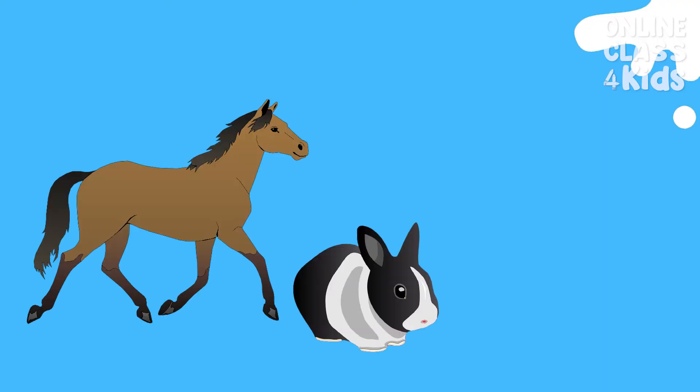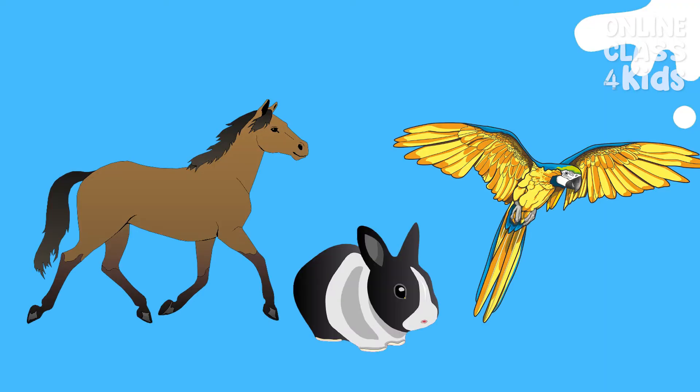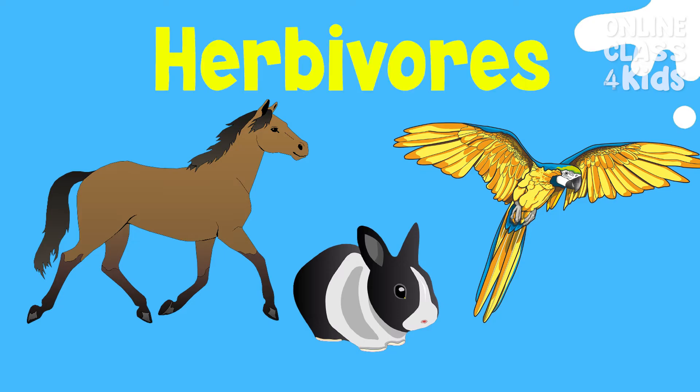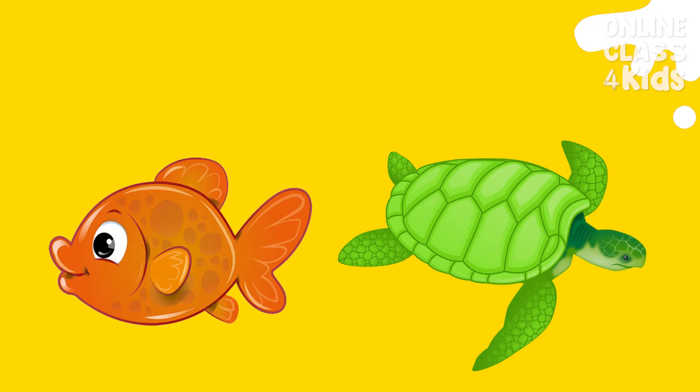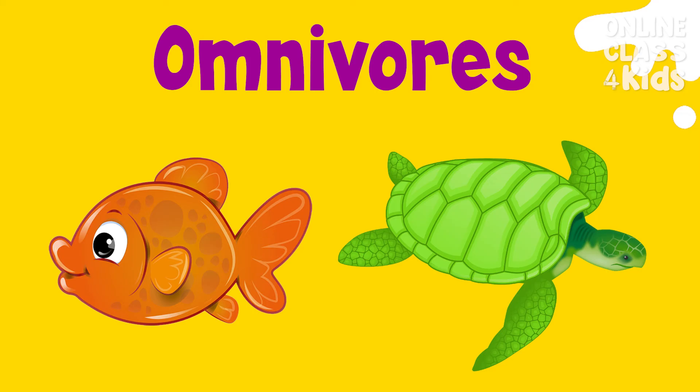Animals who can only feed on plants are called herbivores. Examples are horses, rabbits, and birds. Animals who can eat both are called omnivores. Examples are fish and turtles.